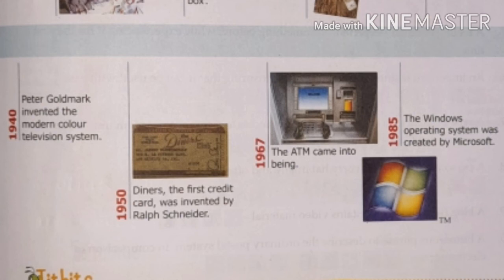Peter Goldmark invented the modern color television system in 1940. Peter Goldmark ne modern color television ka invention 1940 mein kiya tha. The first credit card — called Diners — was invented by Ralph Schneider. Hum log jo credit card use karte hain, pehla credit card jiska naam Diners rakha gaya tha, woh Ralph Schneider ke through invent huwa, 1950 mein.